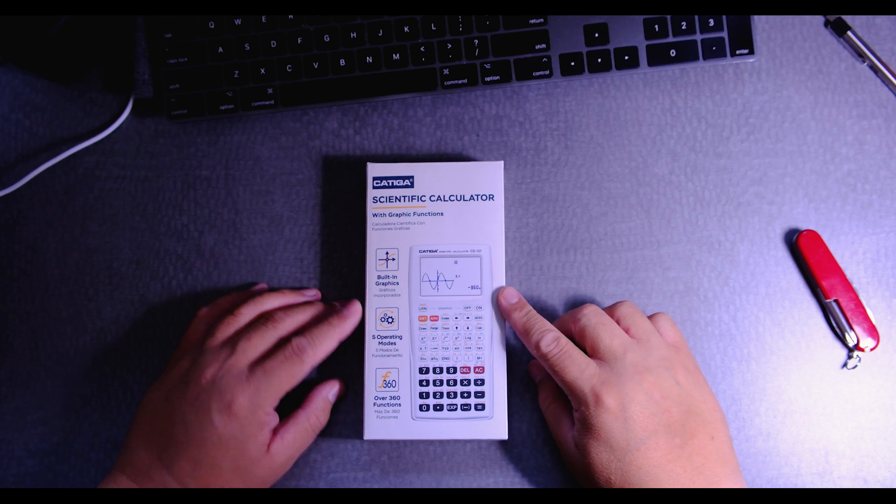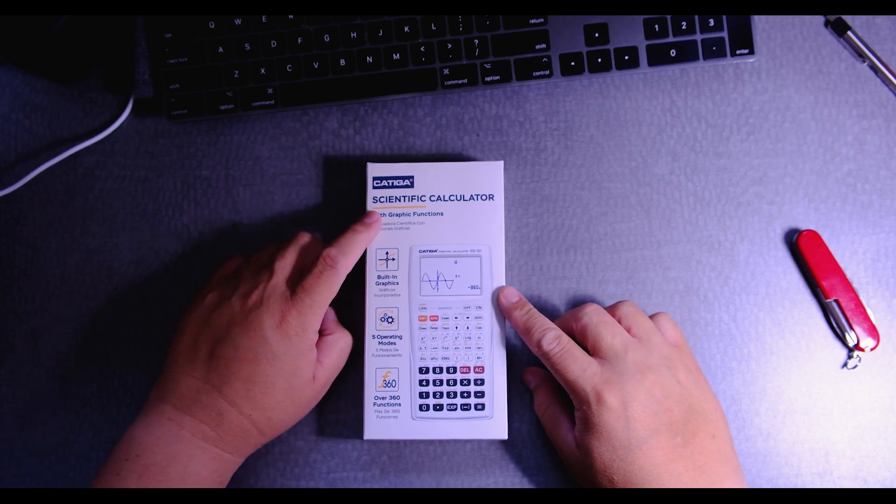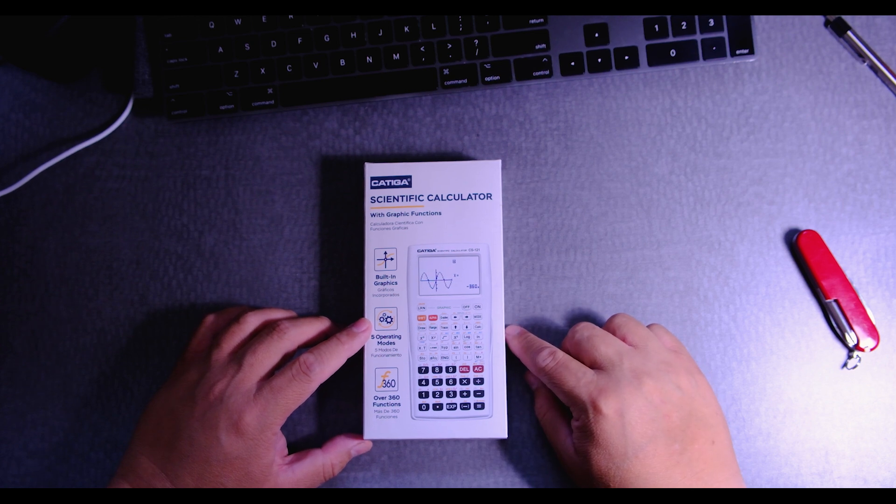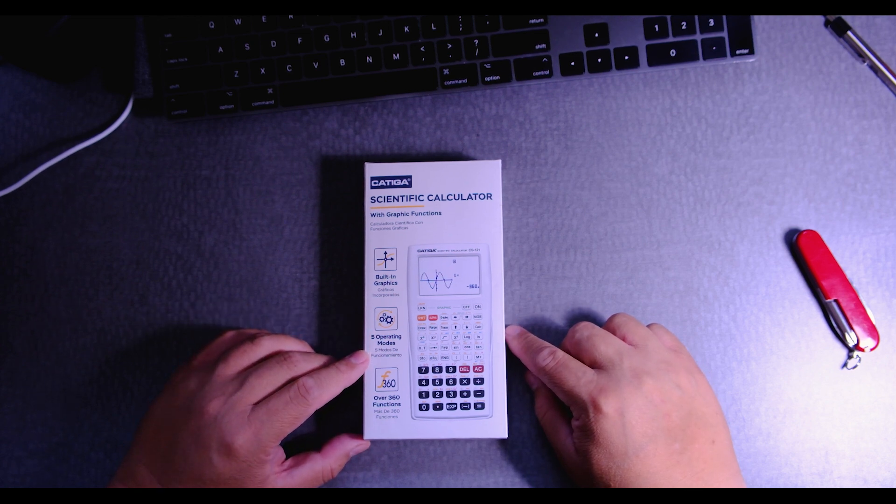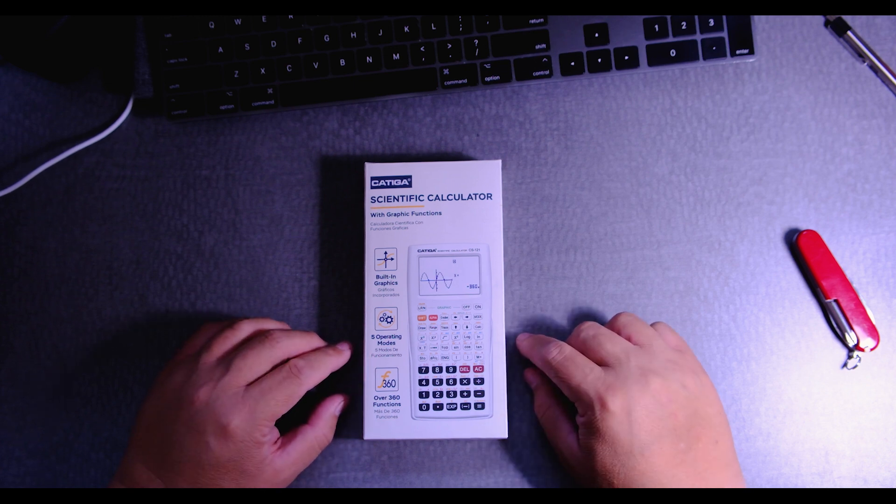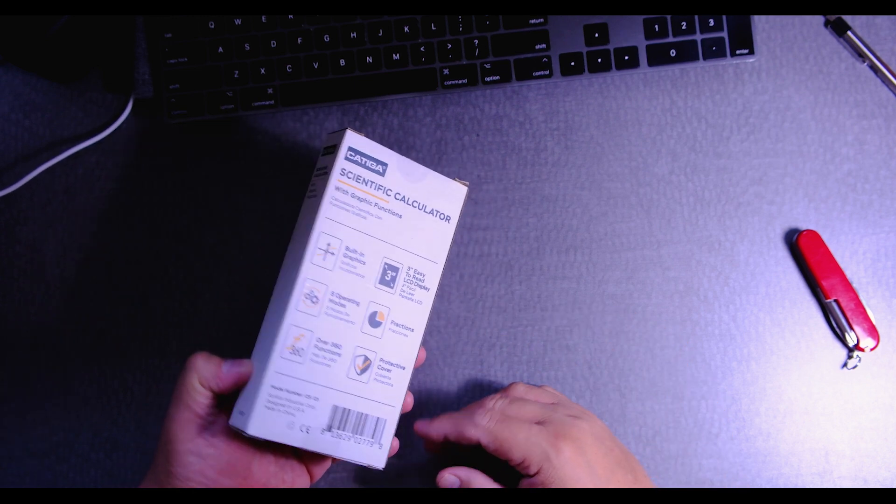So this is the Katega Scientific Calculator with graphing function. This was on sale in Amazon for about $32. Now I've never used this calculator before, and this is just an unboxing.